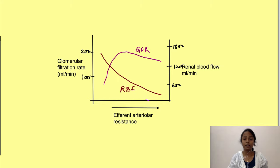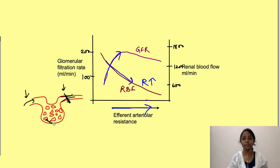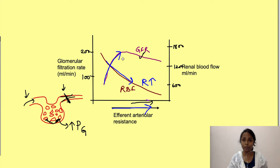The second graph shows the effect of efferent arteriole resistance on renal blood flow and GFR. As efferent arteriole resistance increases, renal blood flow decreases because total vascular resistance is increasing. However, GFR initially rises, because despite decreased inflow, outflow is also decreased, retaining blood in the capillaries and increasing glomerular hydrostatic pressure. If efferent arteriole resistance increases too much, the incoming flow decreases so greatly that GFR eventually falls as well.